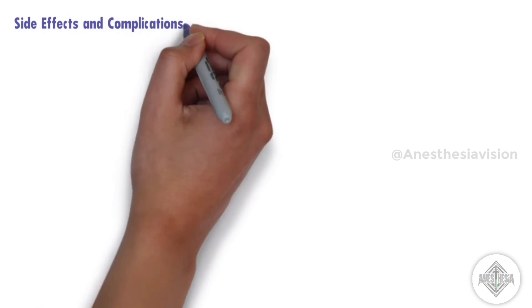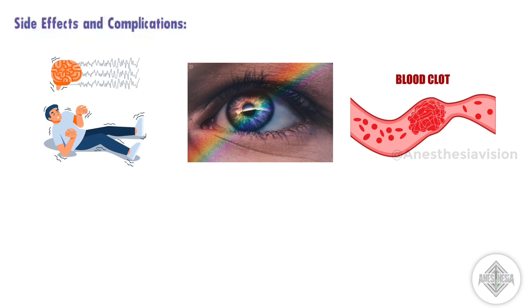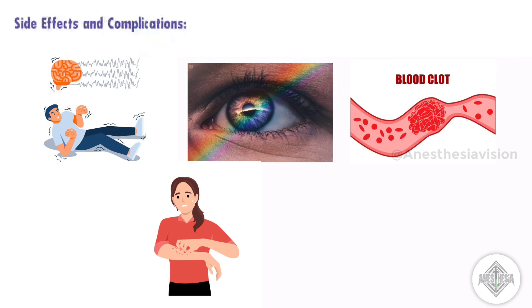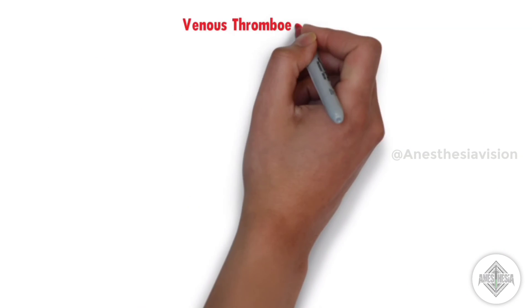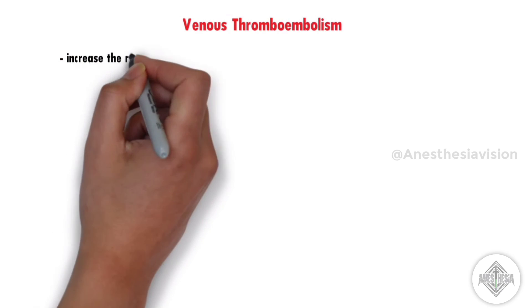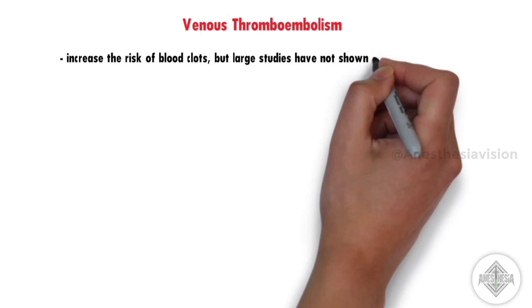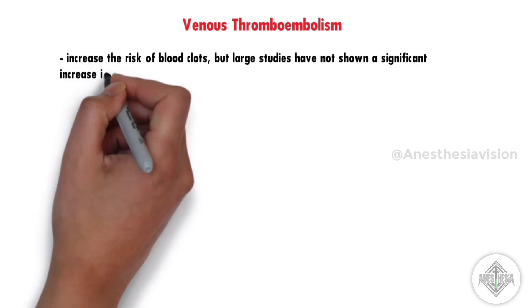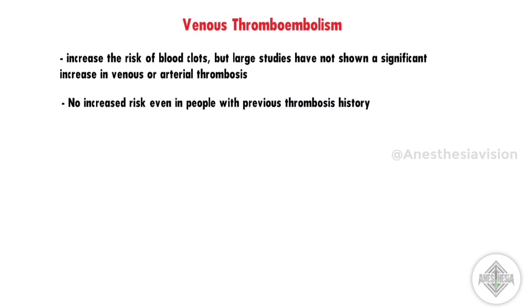Side effects and complications: Side effects are rare, but reported ones include seizures, changes in color vision, blood clots, allergic reactions, anaphylaxis, and venous thromboembolism — which is a debated risk. Tranexamic acid may increase the risk of blood clots, but large studies have not shown a significant increase in venous or arterial thrombosis, so no increased risk was found even in people with a previous thrombosis history.